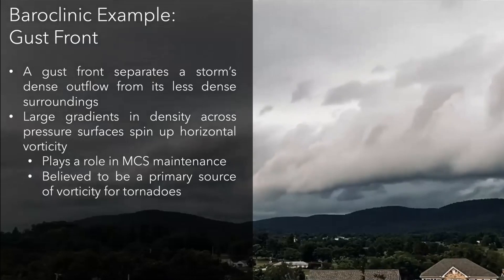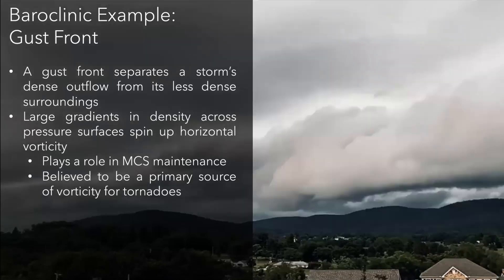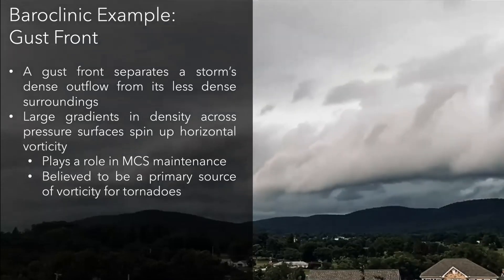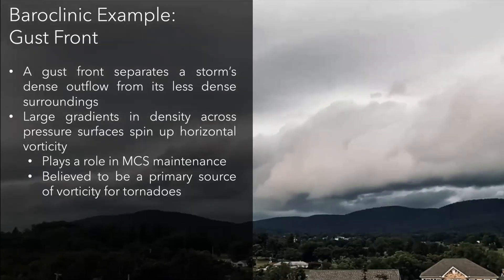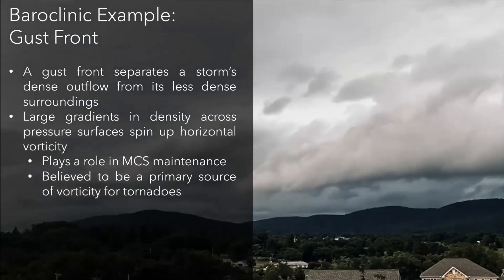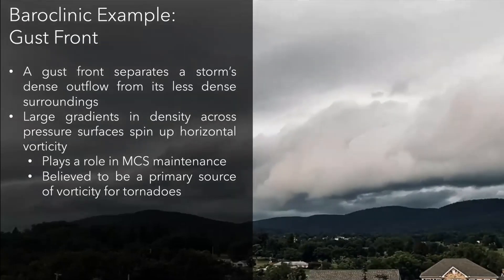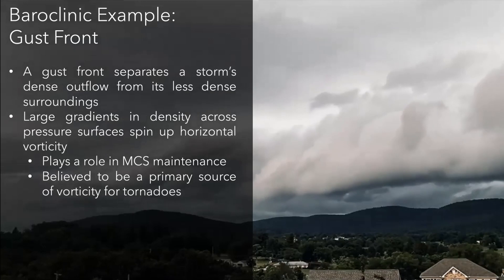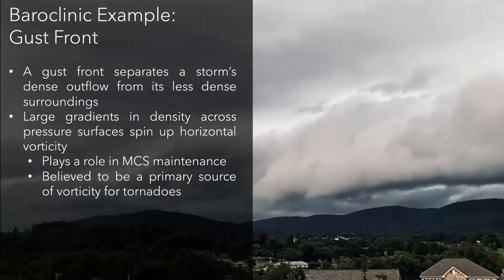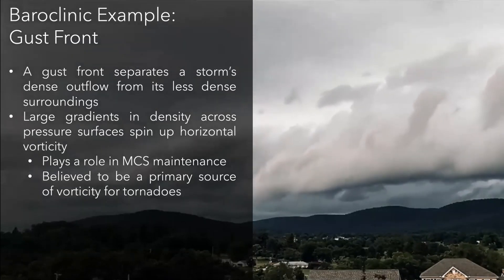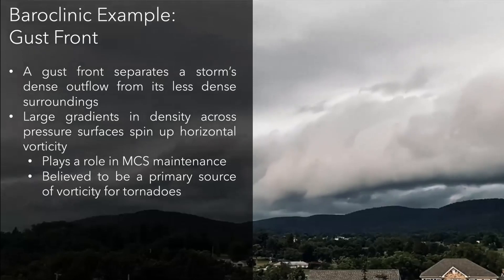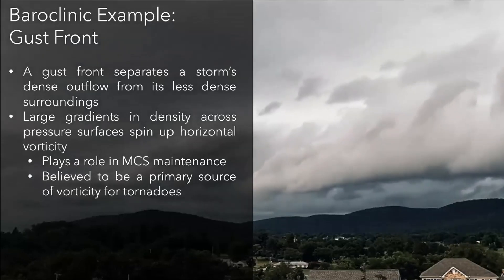What does this mean for storm dynamics? It plays a role in the maintenance of MCSs — that circulation strength and how it interacts with ambient shear can determine whether or not a squall line will mature or decay. It is also believed to be the primary source of vorticity for tornadoes. Whereas mesocyclones get their vorticity from the environment, it appears that tornadoes require the storm itself to generate new vorticity. It's generally accepted that the vorticity in tornadoes comes mostly from baroclinicity.